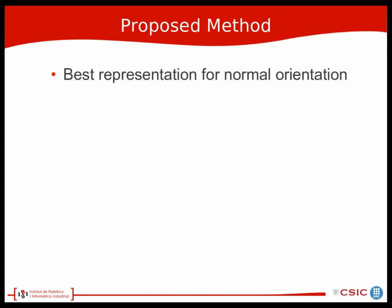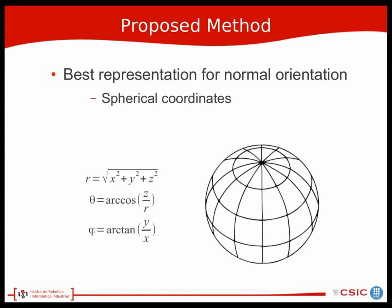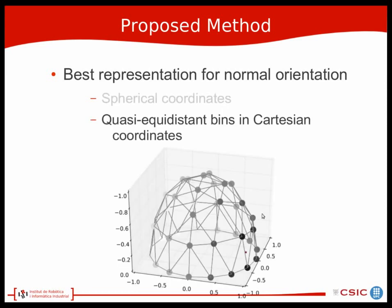Some technical questions arise, such as which is the best representation for the normal orientation. One straightforward solution would be to use spherical coordinates as done in previous work. However, spherical coordinates have undesirable properties: bins defined near the equator are always much larger than those near the North Pole, and bins near the North Pole have a high risk of corruption by noise, leading to aliasing when voting in a histogram. To solve these problems, we instead use quasi-equidistant bins in Cartesian coordinates and assign normals to a particular bin based on Euclidean distance.